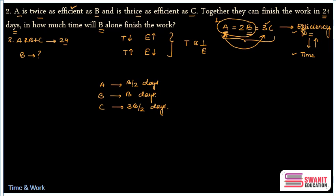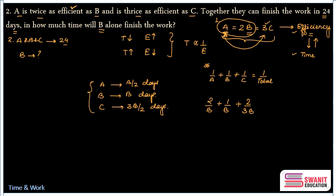We've now converted the efficiency equation into time. The primary time-and-work equation is: 1/A + 1/B + 1/C = 1/Total. Substituting A = B/2 (so 1/A = 2/B), B = B (so 1/B = 1/B), and C = 3B/2 (so 1/C = 2/3B), and total = 24 days: 2/B + 1/B + 2/(3B) = 1/24.